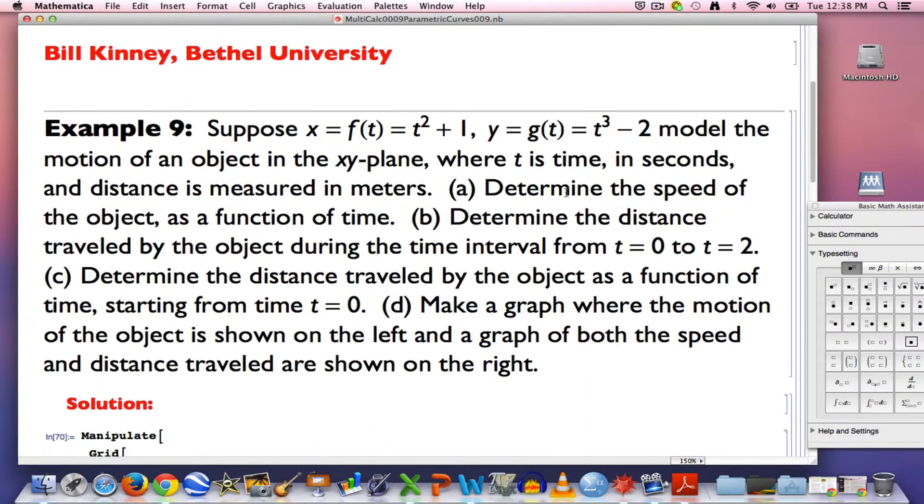And here's our example. Suppose you've got this system of parametric equations that you see here. x = f(t) = t² + 1, y = g(t) = t³ - 2 model the motion of an object in the xy-plane, where t is time measured in seconds, and x and y are the coordinates of the point as it moves in the plane. They are functions of time. Distance is measured in meters.